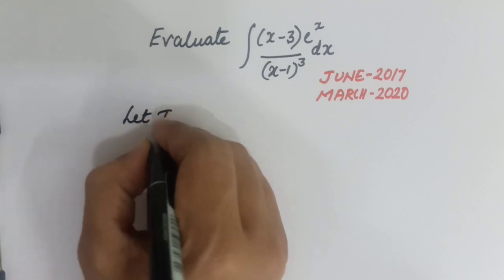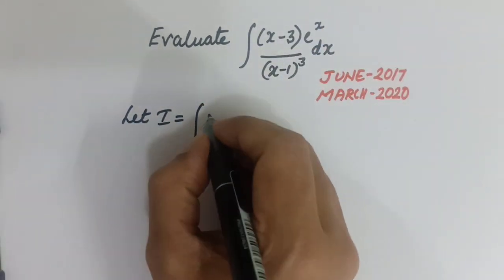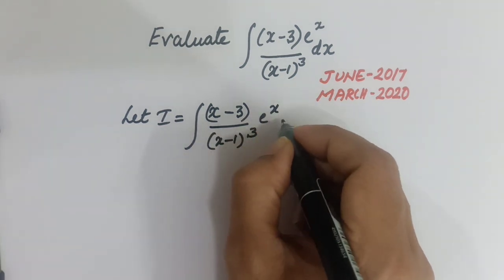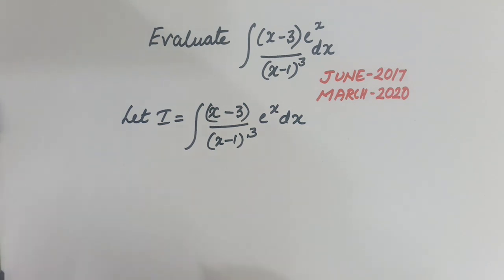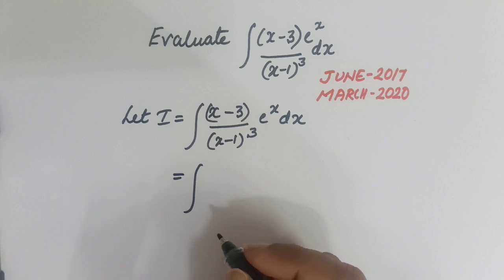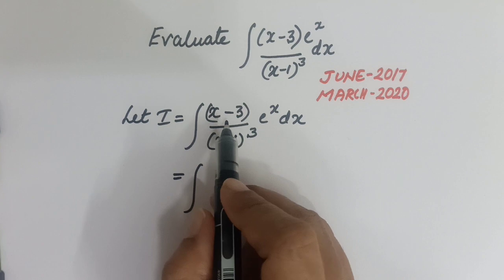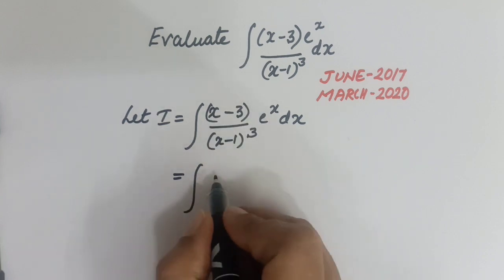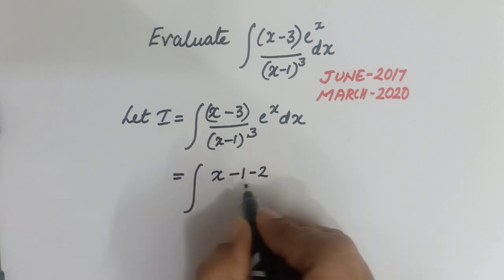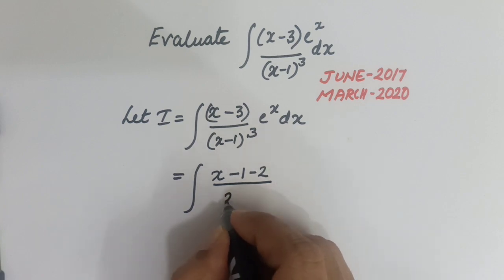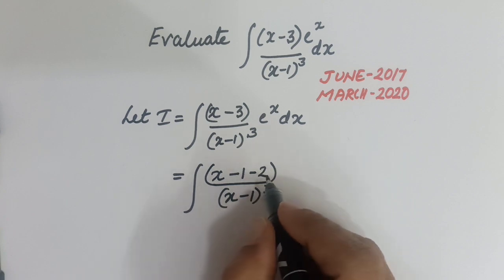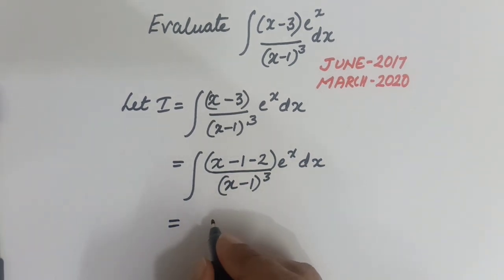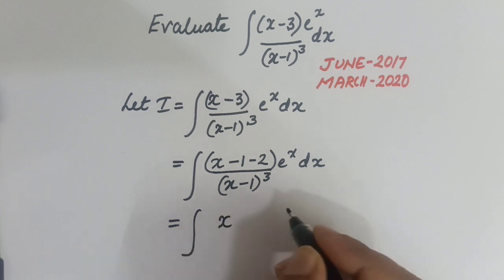Let I equal the integral of (x minus 3) by (x minus 1) whole cube, e raised to x dx. The next step is to change the numerator into the form of the denominator. We write x minus 3 as (x minus 1) minus 2, since (x minus 1) minus 2 equals x minus 3. So we have the integral of (x minus 1) minus 2, all over (x minus 1) cube, times e raised to x dx.